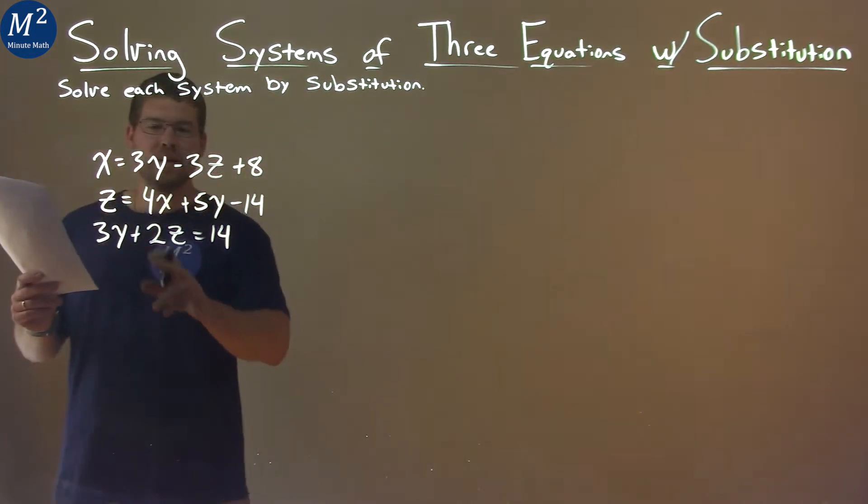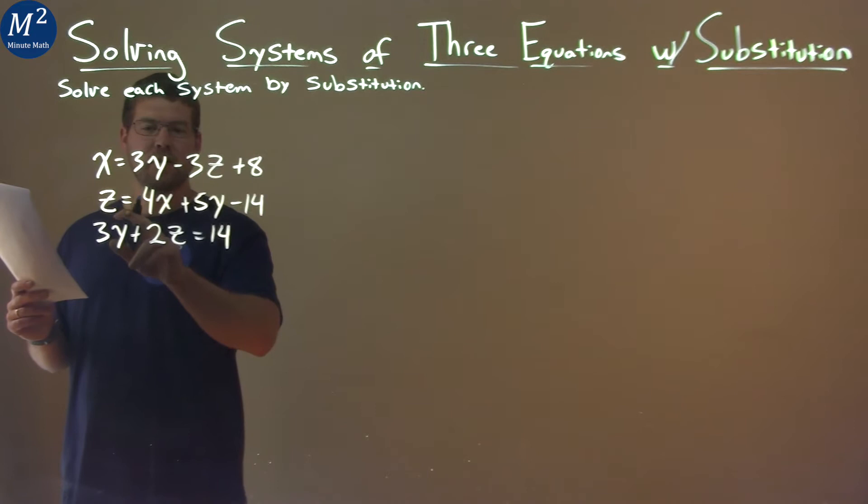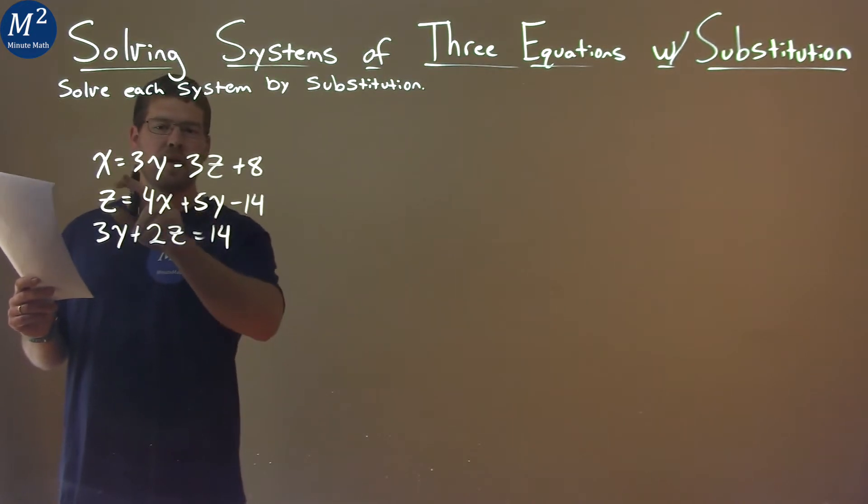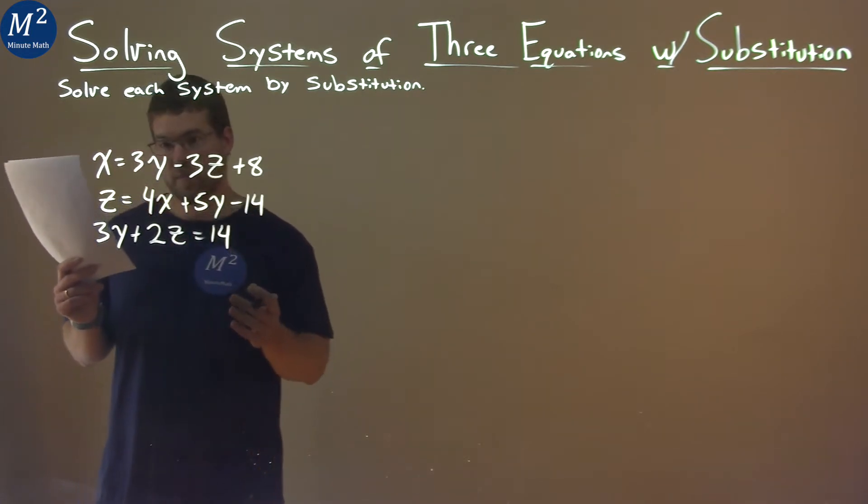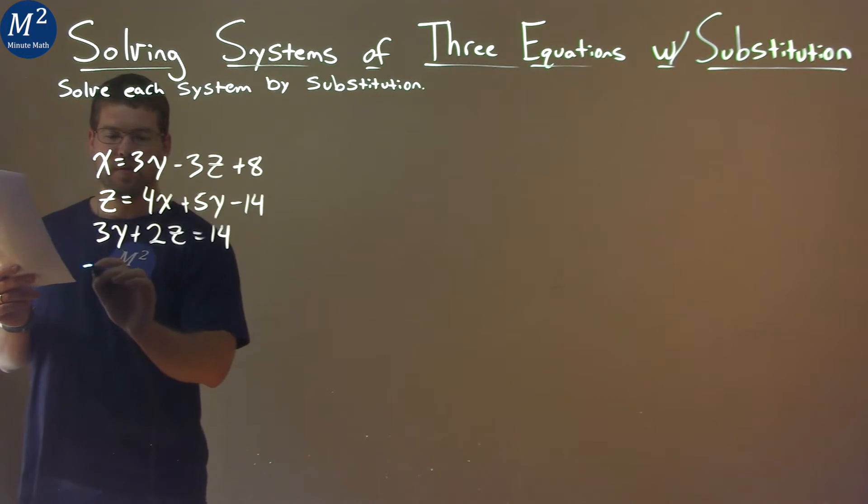The first thing I'm looking at is I have z here by itself, and it's equal in terms of x and y. This x is in terms of y and z, so if I combine the two, I just have an equation now in terms of z's and y's. So second equation, z equals, I'm using blue, my other marker was dying.